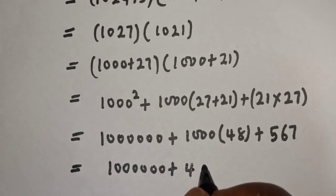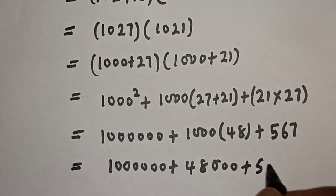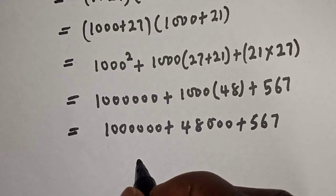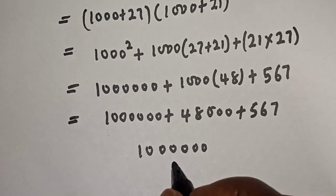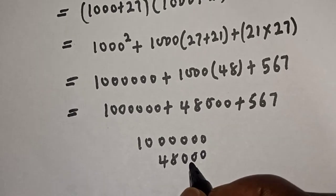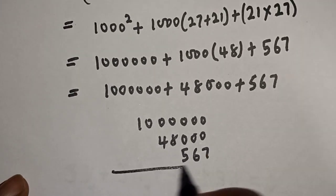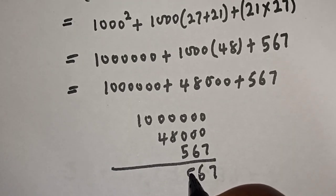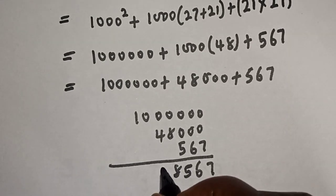This equals 1,000,000 plus 48,000 plus 567. Let's add everything together: 1,000,000, then 48,000, and 567.